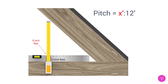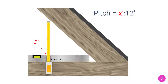Take a level, tape measure, torch, and a pencil into the attic. Mark off 12 inches on the level and place it down horizontally against the roof rafter. Now measure vertically with the tape measure from the 12-inch mark on the level straight up to the underside of the rafter. That measurement is the number of inches the roof rises in 12 inches.